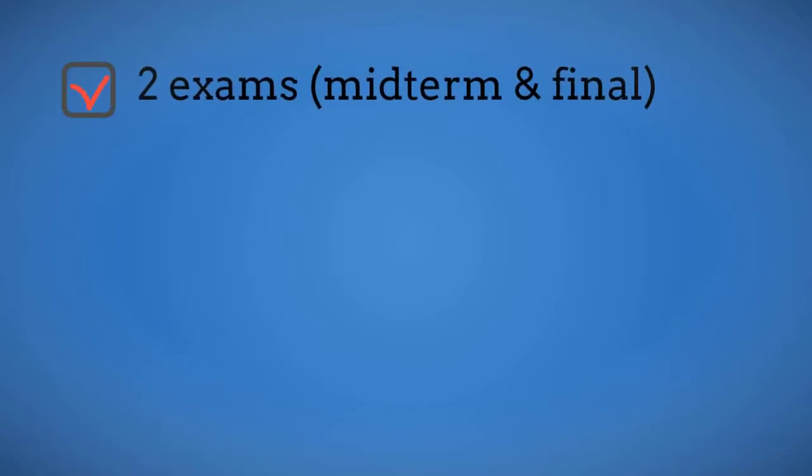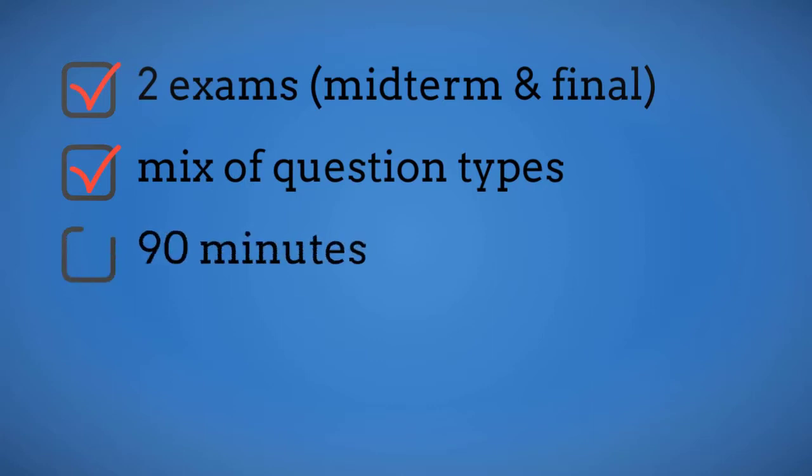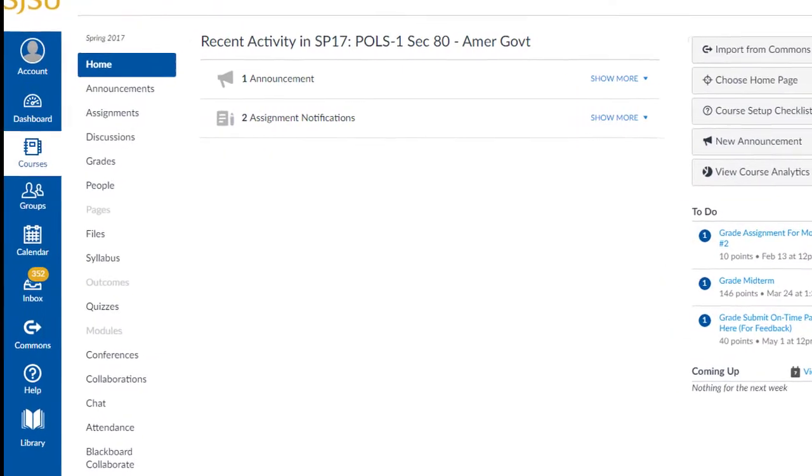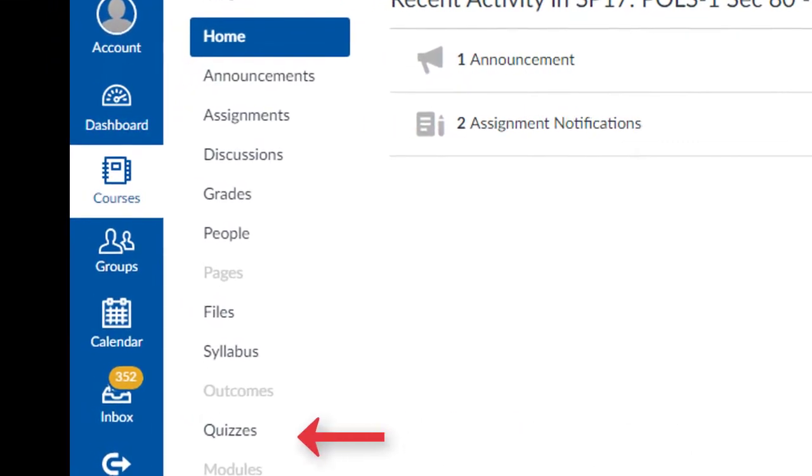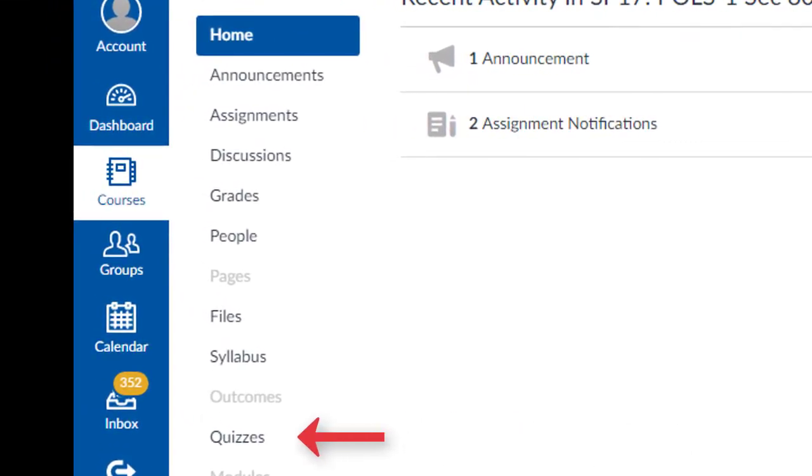There are two exams, a midterm and a final. They both consist of a mix of question types and you'll have 90 minutes to complete them. The final exam is not cumulative. The exams can be found by clicking the Quizzes tab on the left-hand side of the Canvas dashboard.